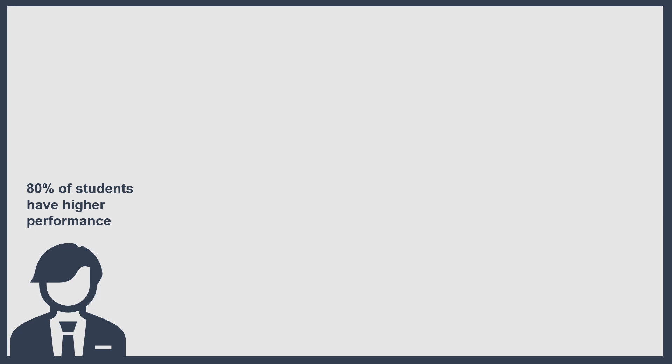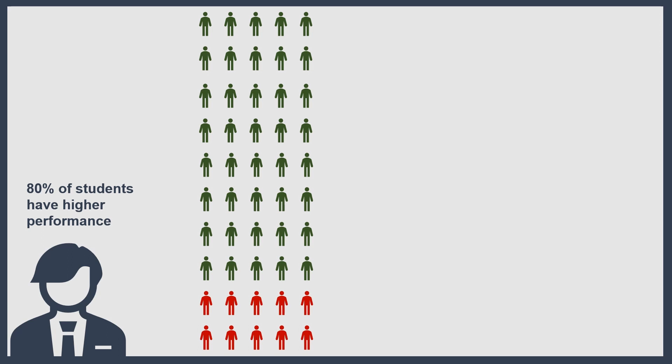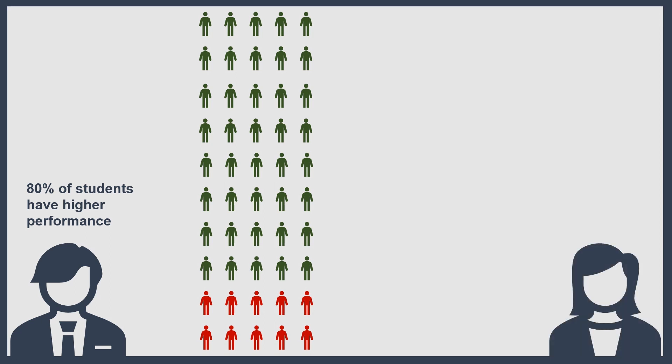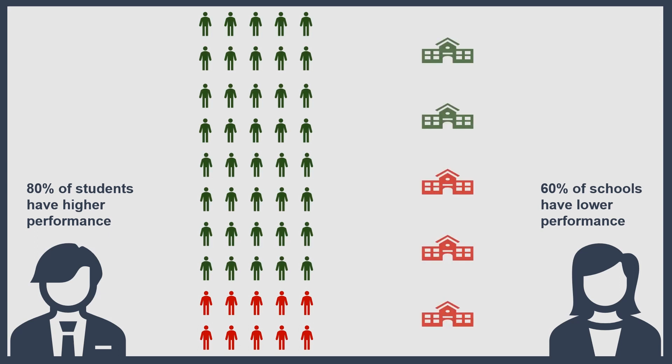Throughout the book Whelan uses American examples, but I've made them more generic. Imagine a town with an election coming up. The mayor says, 'I've been a great mayor — 80% of school pupils have better performance now that I've been mayor. Vote for me again.' But a challenger says, 'That's wrong. 60% of our schools have lower performance — three out of five schools are worse, only two out of five are better. Our schools are getting worse. Vote for me instead.' Both are using statistics to get your vote.